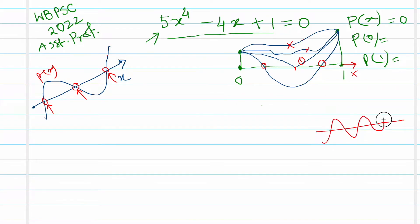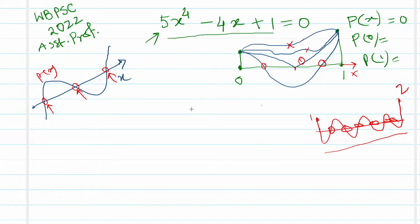There are many possible graph shapes. We know p(0)=1 and p(1)=2. To understand the behavior in between, we differentiate and find critical points, because at every local maximum or minimum the tangent is horizontal and p'(x) = 0.